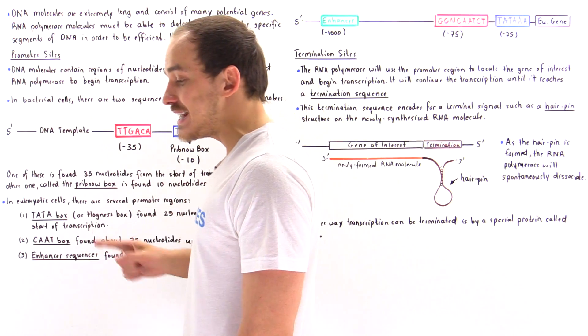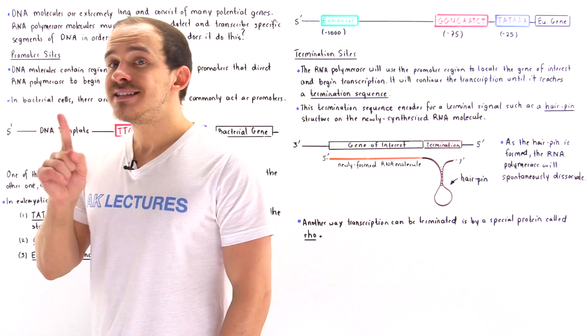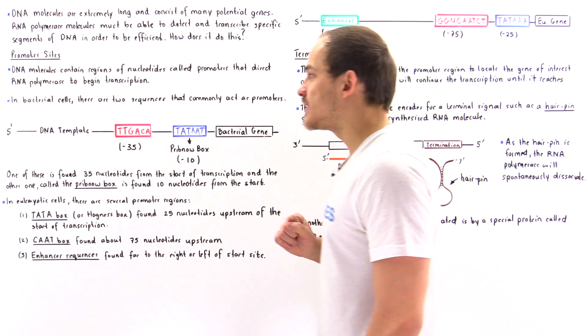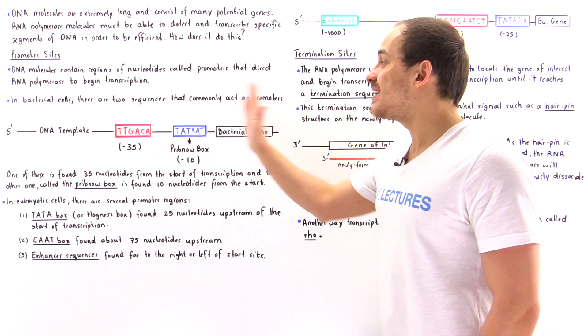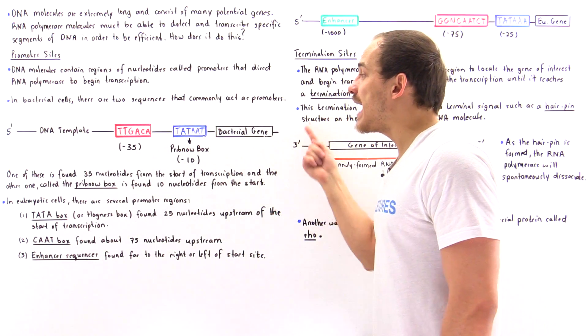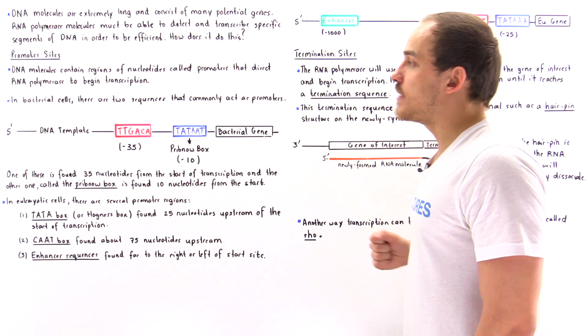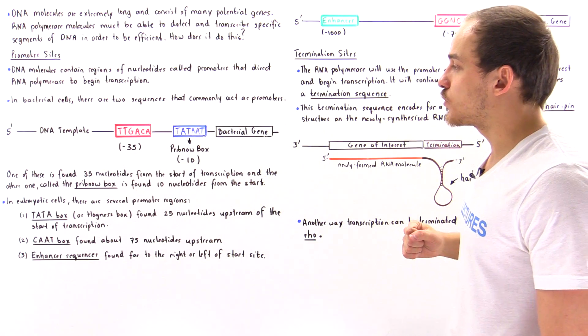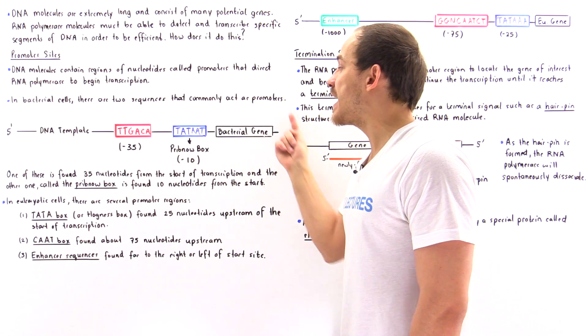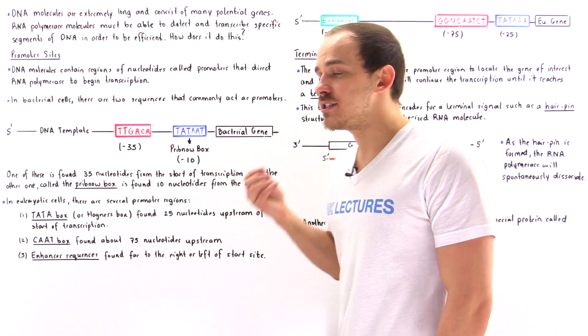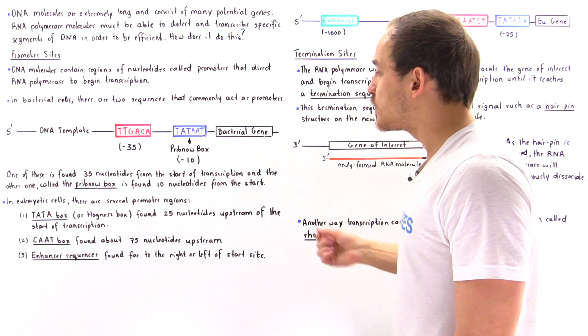One of these sequences is found ten nucleotides to the left of the initial start of the transcription process — that is, to the left of the bacterial gene we want to transcribe.